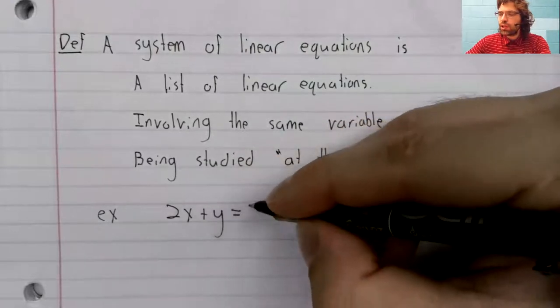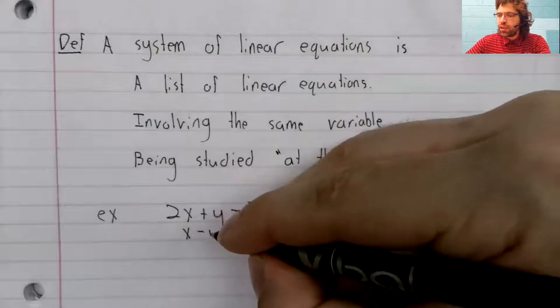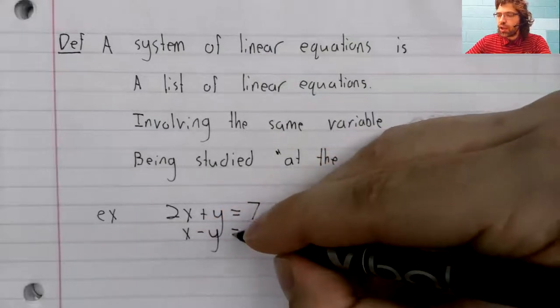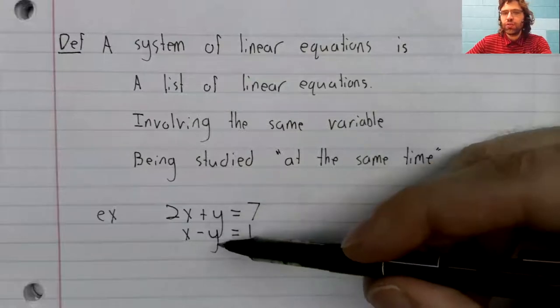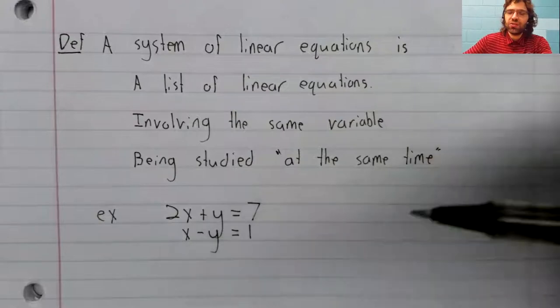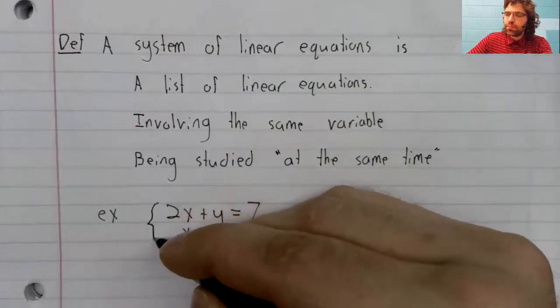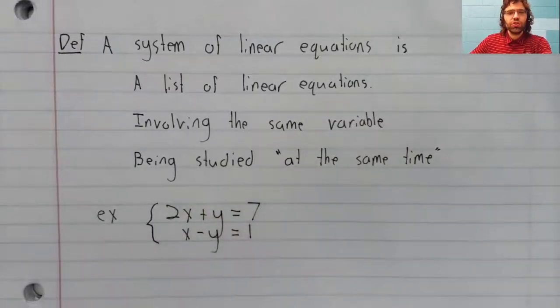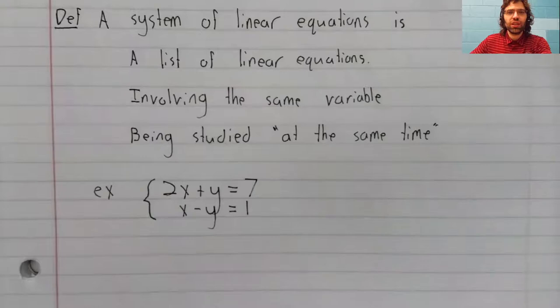Here's a linear equation. Here's another linear equation. And to indicate that we want to view these linear equations as being a system, we put curly brackets enclosing them.